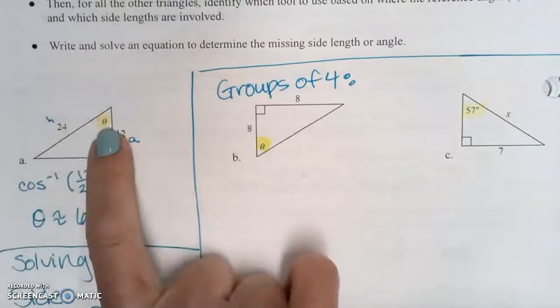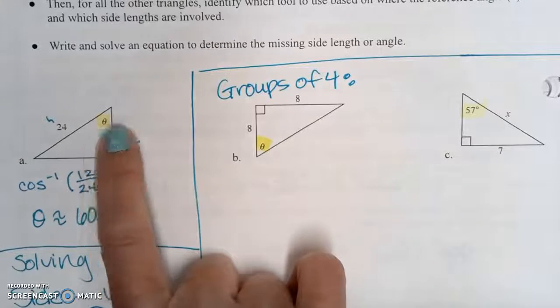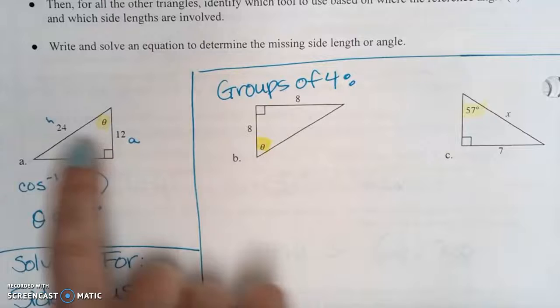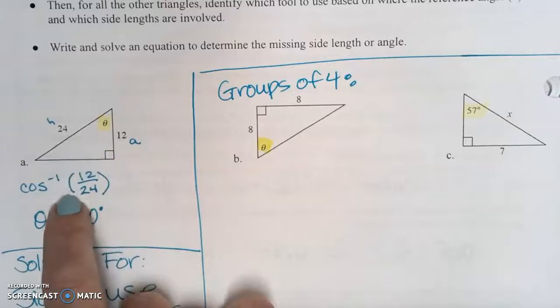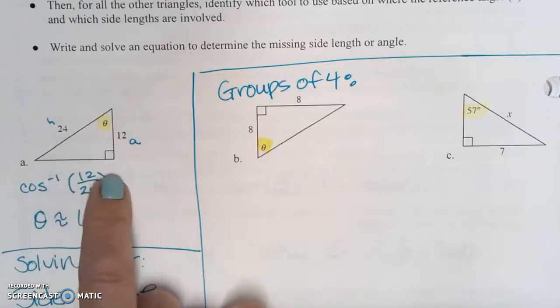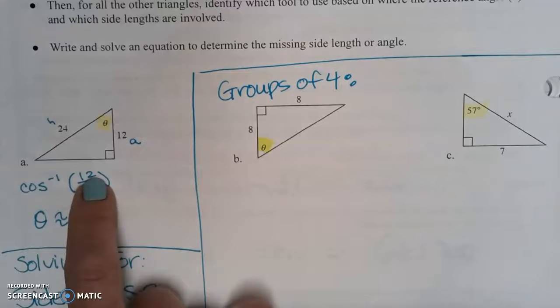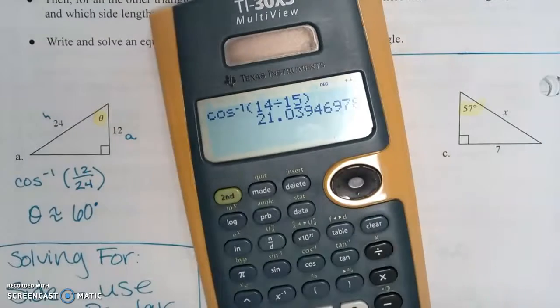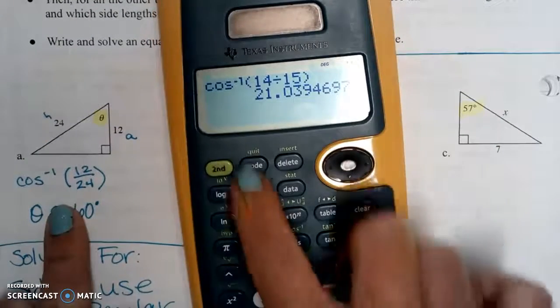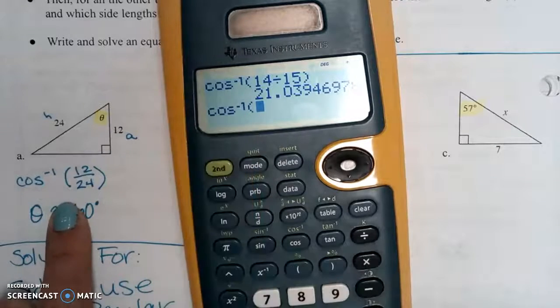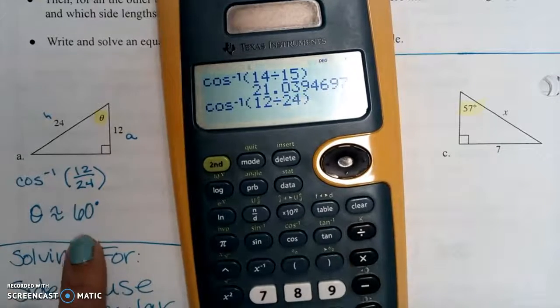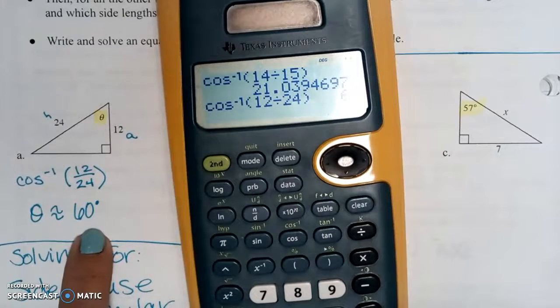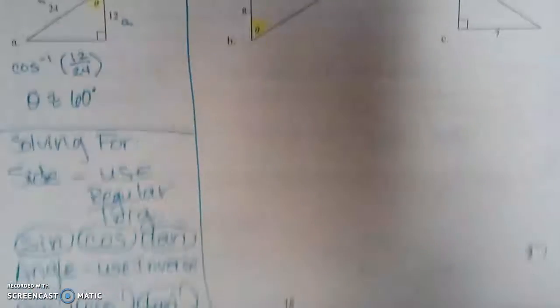So let's look at A first. So for A, I went ahead and highlighted the angle theta, and that's what we want to solve for. From that angle, we have the adjacent side and the hypotenuse. So I need to use cosine, but we're solving for the angle. So we're going to use inverse cosine. The adjacent side is 12, so I put that in the numerator. The hypotenuse is 24, so I put that in the denominator, and then I typed it in the calculator. So for the calculator, the inverse cosine, so second cosine, make sure it has a little one, and then type in the ratio of 12 to 24. Hit equals, and it's going to give you an angle measure of 60 degrees.